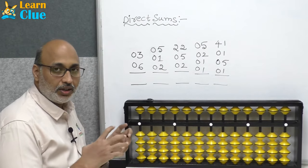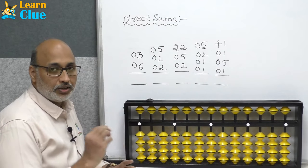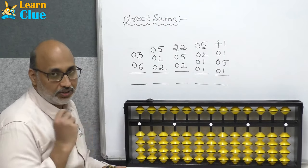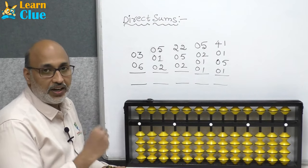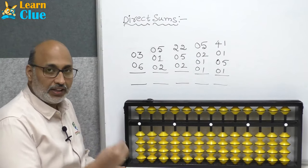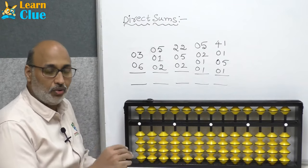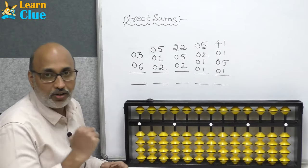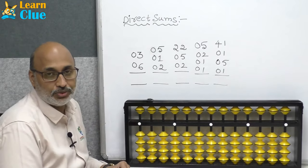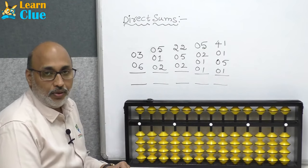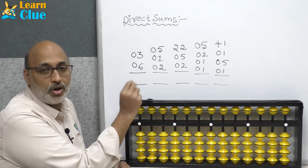Hi students, now we are going to see direct problems especially for first-class students. So far we have learned all bead moments, identification, flash cards — everything. Now we are confident enough to identify the bead values. Now the same kind of thing, we are going to do simple problems on abacus.